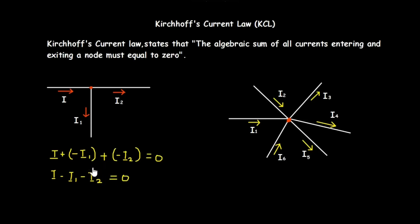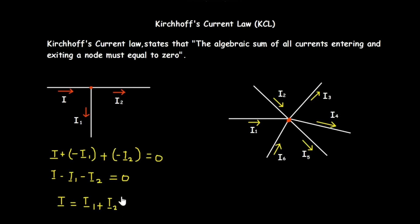That's what Kirchhoff's current law gives us. You can rewrite this equation as i equals i1 plus i2, since i1 and i2 sum to i. It's the same thing. Let's look at another example.